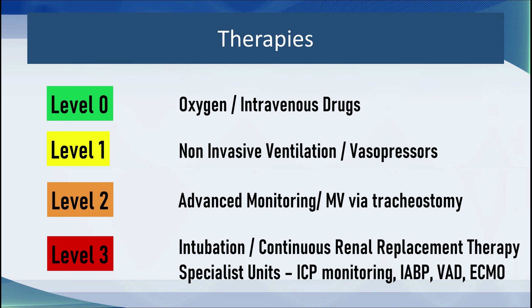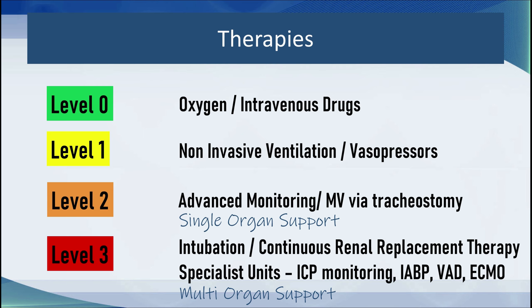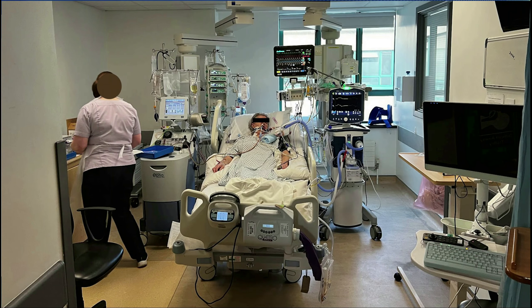Generally in level two units there is single organ support, and in level three ICUs there is multi-organ support. Looking at a patient in the picture who is on a ventilator, intubated, with a monitor and multiple infusions, this is intensive care. This patient is also receiving plasma exchange.